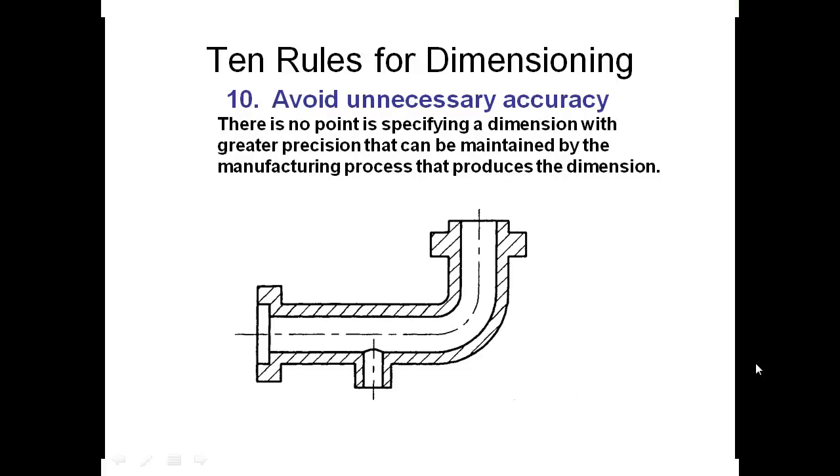Our final rule, rule number 10 is to avoid unnecessary accuracy in your drawing. There's no point to you specifying a dimension with greater precision than we can actually be maintained by the manufacturing process that produces that dimension. Let me use this example to explain it. This is a cross-section of a pipe here that we might be making from a casting technique and this is something we're going to look at in later lectures on manufacturing. We may have a dimension here that is 50.8 on this internal diameter here.